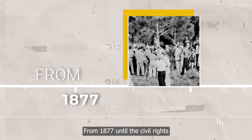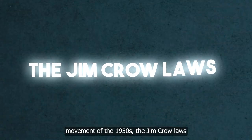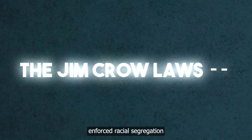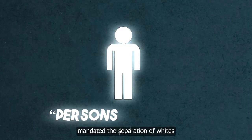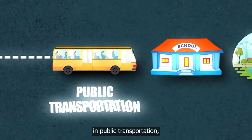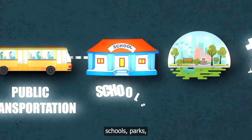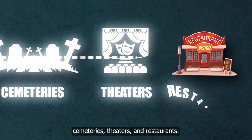From 1877 until the Civil Rights Movement of the 1950s, the Jim Crow Laws enforced racial segregation in the American South. Originating from a derogatory minstrel routine, these laws mandated the separation of whites and persons of color in public transportation, schools, parks, cemeteries, theaters, and restaurants.